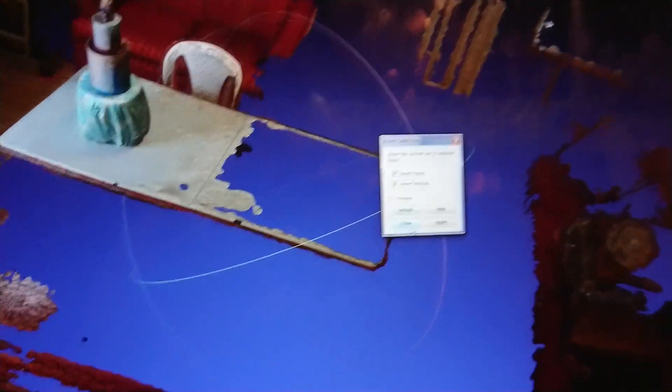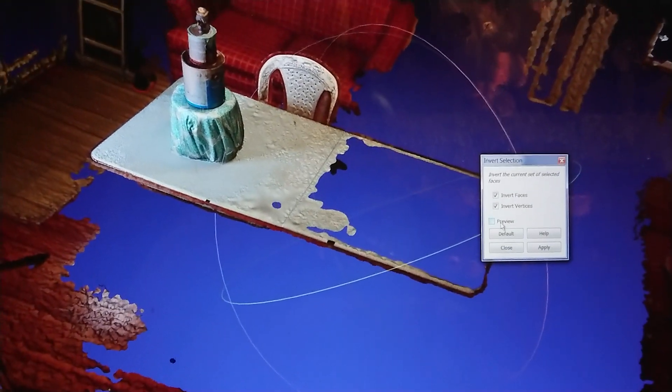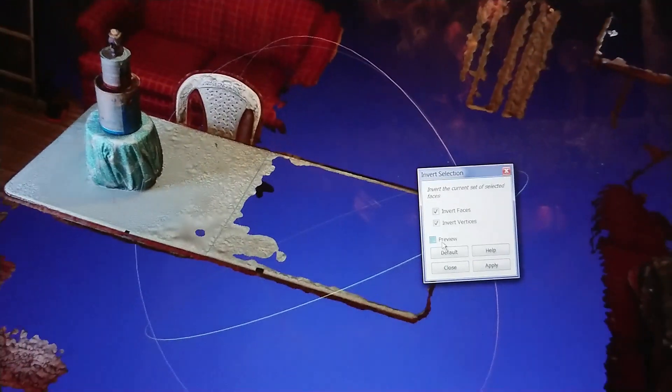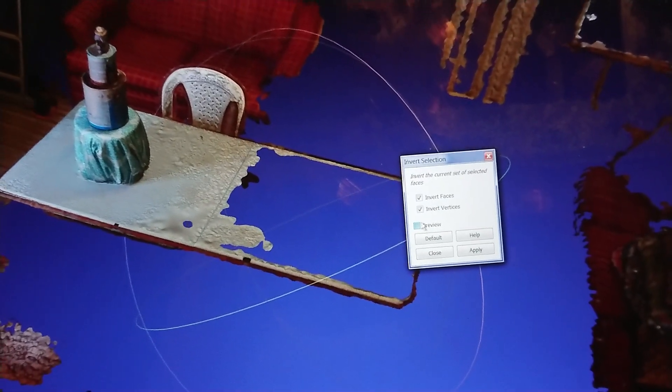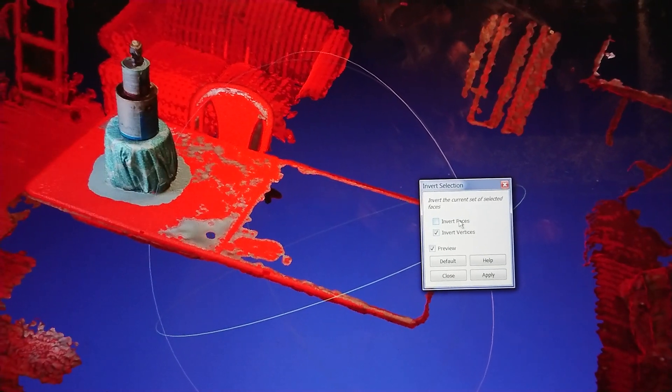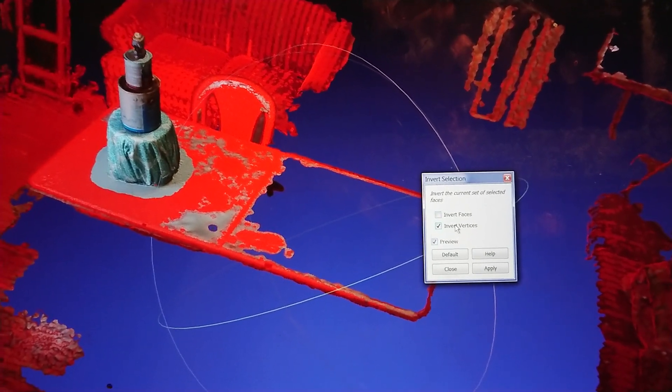And now it all disappeared there, but that's okay. Then you got to click on preview. But one thing I realized was it would not do anything if I had faces selected. So I have to just click invert vertices.